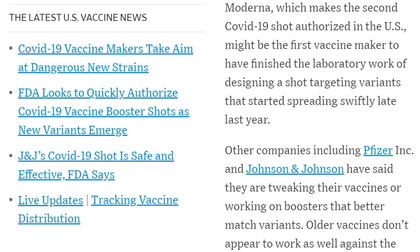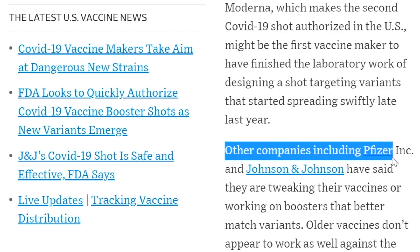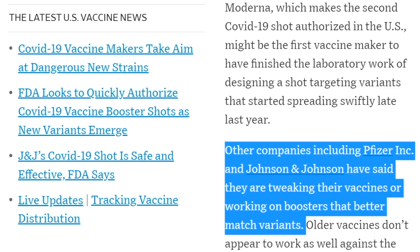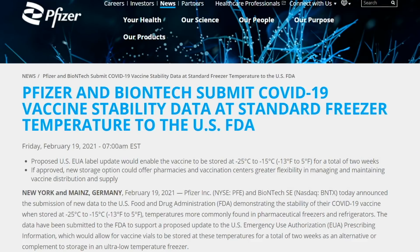According to this article, it's not just Moderna, but other companies including Pfizer and Johnson & Johnson have said that they are tweaking their vaccines or working on boosters that better match the variants. One of the issues with the Pfizer vaccine has been the requirement for the ultra freezers that are required to store the Pfizer vaccine.